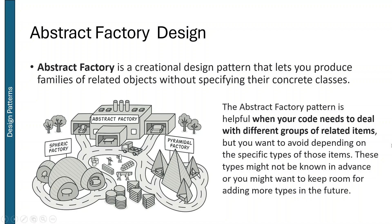The abstract factory is helpful when your code needs to deal with different groups of related items. All of these things are coming under the same company in this example. But you want to avoid depending on the specific type of those items. For example, we are going to manufacture furniture items.